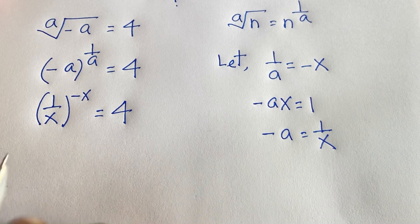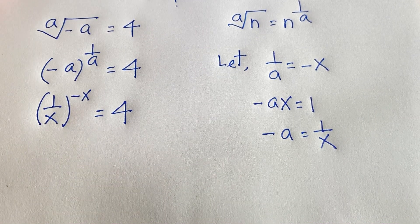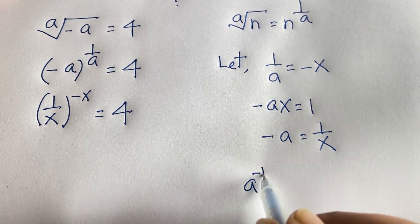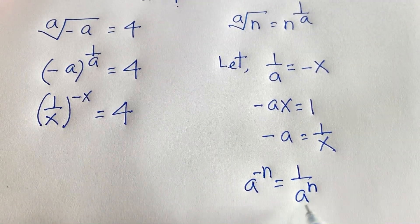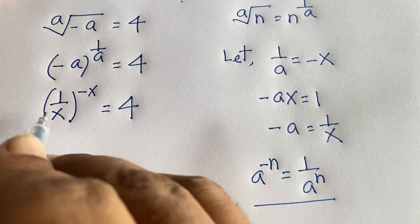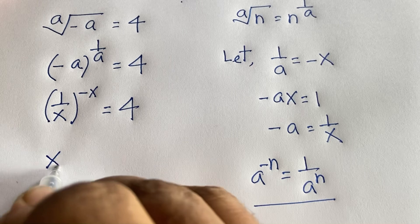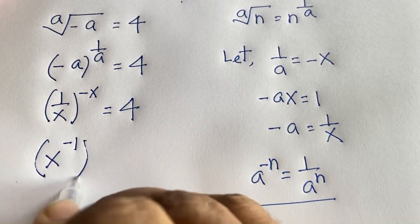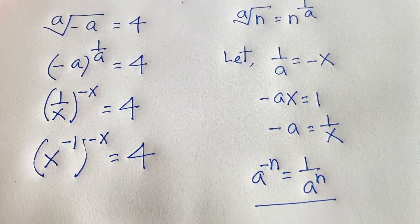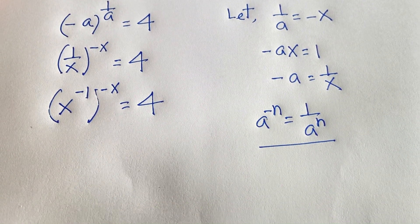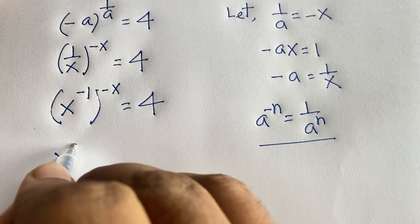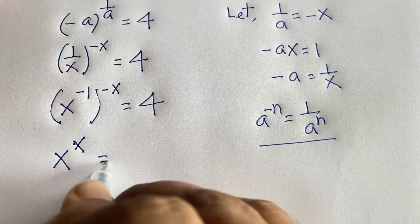Now, using the exponential rule that a to the power minus n equals 1 over a to the power n, we rewrite 1 over x as x to the power minus 1. So the expression becomes x to the power minus 1, whole to the power minus x, which simplifies to x to the power positive x, equal to 4.